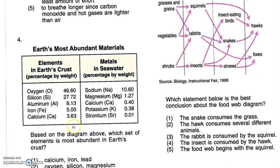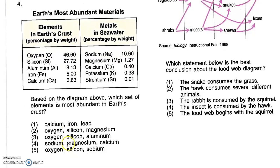Based on the diagram above, which set of elements is most abundant in Earth's crust? The answer options are: calcium, iron, lead; oxygen, silicon, magnesium; oxygen, silicon, aluminum; sodium, magnesium, calcium; oxygen, silicon, sodium.